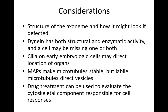In terms of the axoneme structure, we want to understand what it looks like and how it might appear if defective. Dynein has both structural and enzymatic activity, and a cell may be missing one or both components. Cilia on early embryologic cells may direct the location of organs. MAPs make microtubules stable, while labile microtubules direct vesicles and the location of organelles such as mitochondria, Golgi, and ER. Drug treatment can evaluate which cytoskeletal component is responsible for a given cell response.